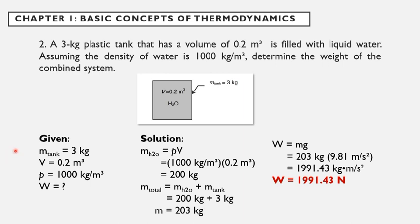So we have the given: mass of the tank is equal to 3 kg, the volume is equal to 0.2 m³, and the density of the water is 1,000 kg per m³. So we have to find the weight of the combined system.